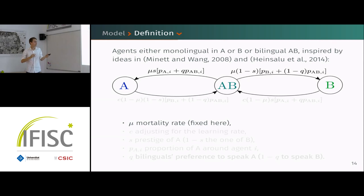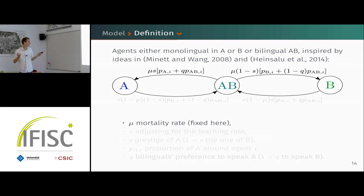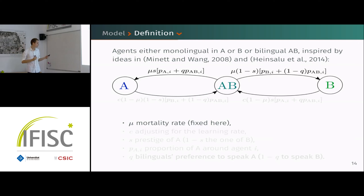We define two kinds of processes. The first relates to losing your language, done through the passing of generations — people dying — so we have this mortality rate μ. When one person disappears, the offspring might keep their language or not, as we do a one-for-one replacement to keep a fixed population.